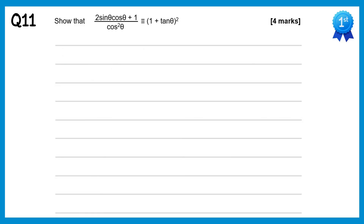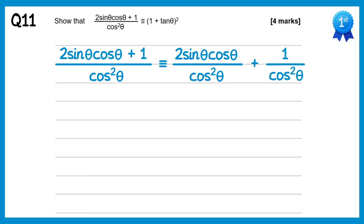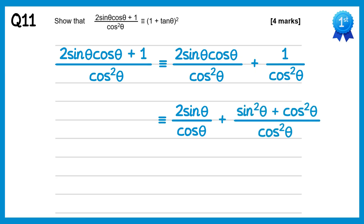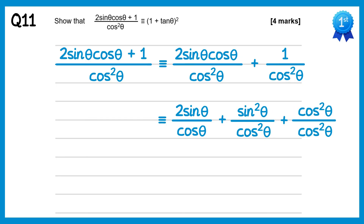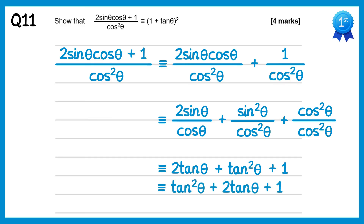For this final question we start with the left hand side and split into two fractions: 2sinθ·cosθ over cos²θ plus 1 over cos²θ. On the left fraction cosθ on top cancels with one on the bottom, giving 2sinθ over cosθ. On the right we cleverly replace 1 with sin²θ + cos²θ, then separate into sin²θ over cos²θ plus cos²θ over cos²θ. Each term simplifies: 2sinθ over cosθ = 2tanθ; sin²θ over cos²θ = tan²θ; cos²θ over cos²θ = 1. Rearranging as a quadratic gives tan²θ + 2tanθ + 1, which factorises to (1 + tanθ)², which is what we wanted to show.